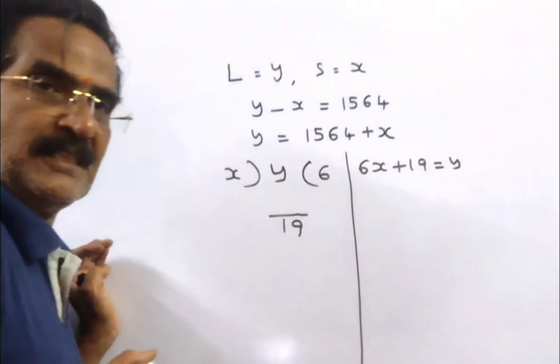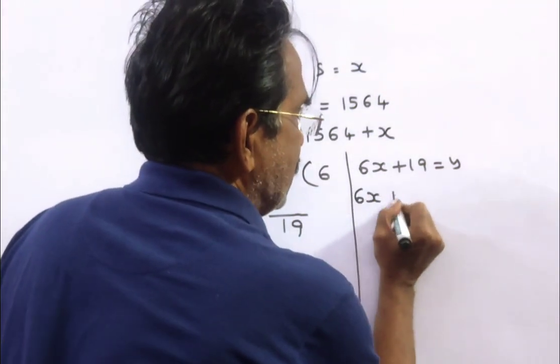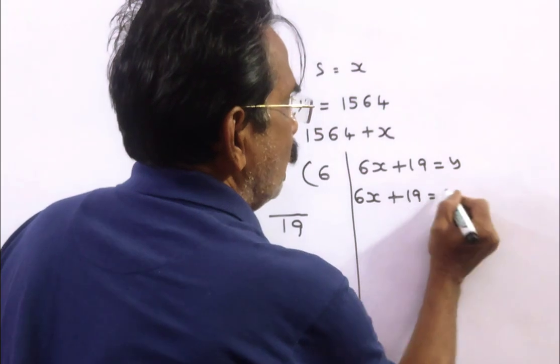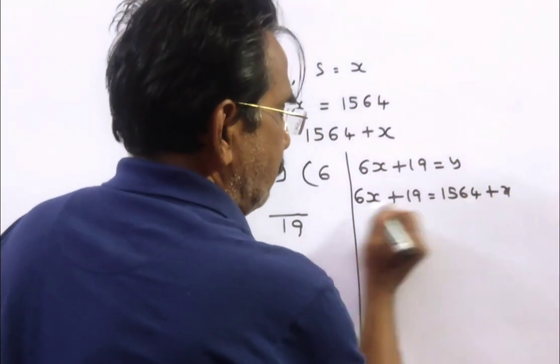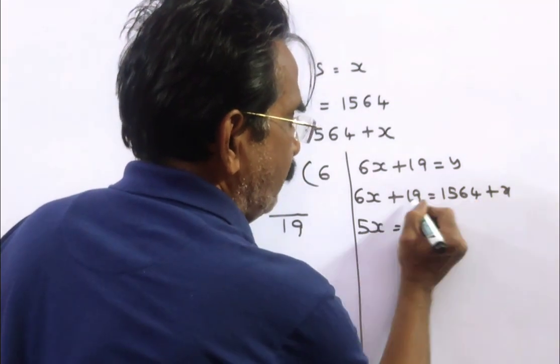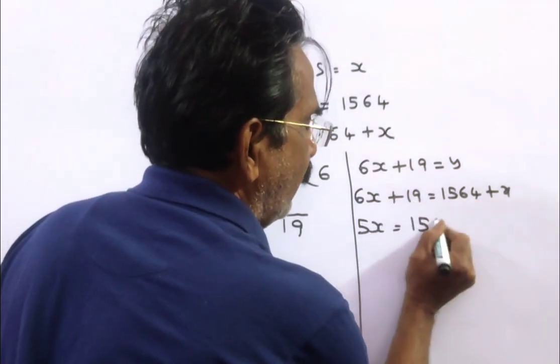Friends, y is equal to 1564 plus x. Therefore, 6x plus 19 is equal to 1564 plus x. It implies 5x is equal to 1564 minus 19, which equals 1545.